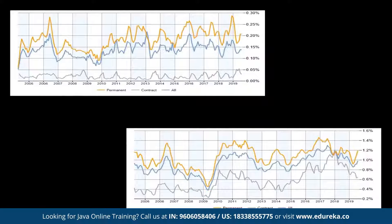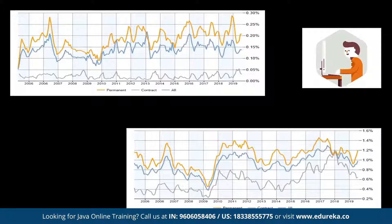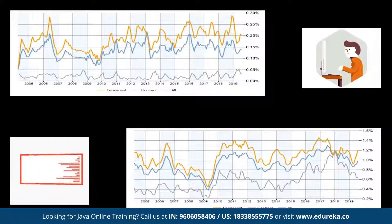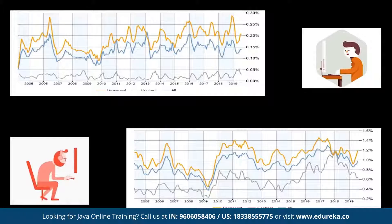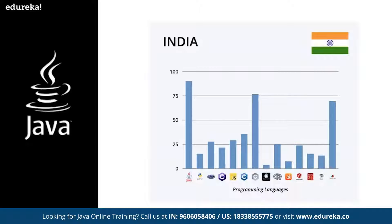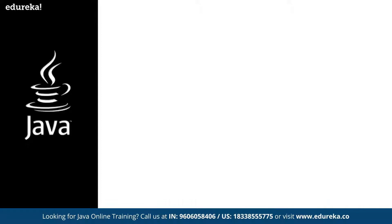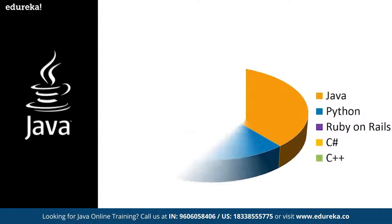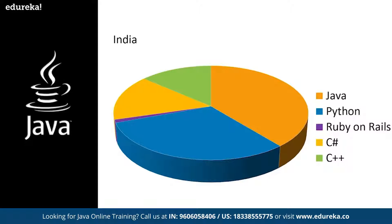Job trends can be divided into two segments based on experience: junior Java developers and senior Java developers. For junior Java developers with around zero to two years of experience, there is an acceptable growth found in recent years. Senior Java developers also show ups and downs, yet an acceptable overall growth. Compared to Python, PHP, and C#, there is a massive requirement for Java developers and related frameworks such as Angular and JavaScript in both USA and India.